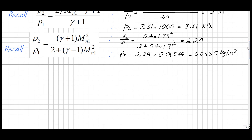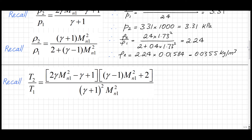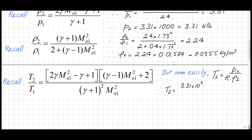Next we calculate the static temperature downstream of the shockwave. Rather than using the full expression directly, we use the ideal gas law: T2 = P2 / (R · ρ2). Substituting P2 = 3.31×10³ Pa, R = 287 J/(kg·K), and ρ2 = 0.0355 kg/m³, we get T2 = 325 Kelvin.